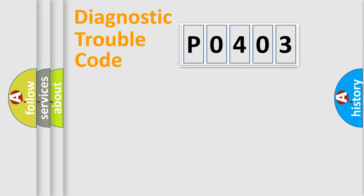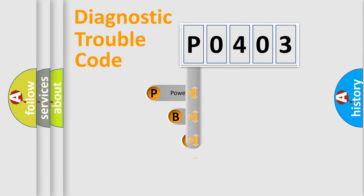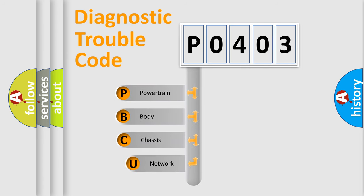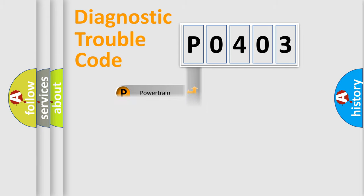Let's do this. First, let's look at the history of diagnostic fault code composition according to the OBD2 protocol, which is unified for all automakers since 2000. We divide the electric system of automobile into four basic units: Powertrain, Body, Chassis, and Network. This distribution is defined in the first character of the code.